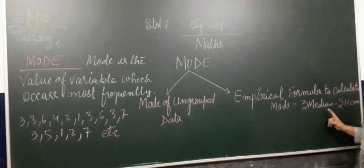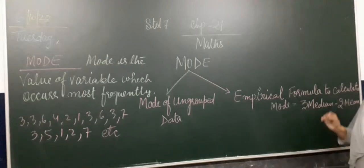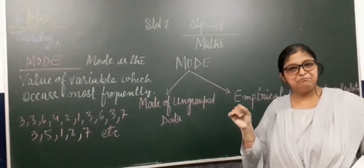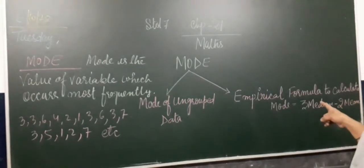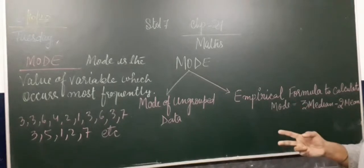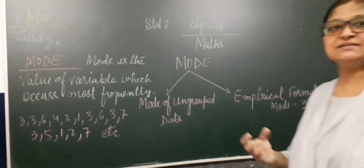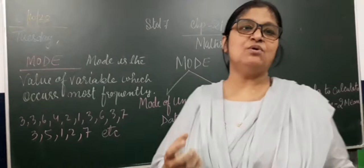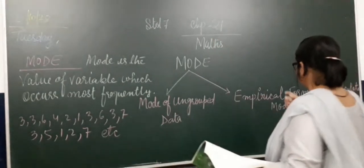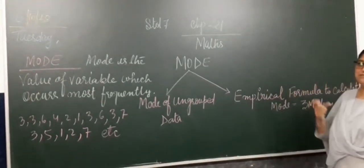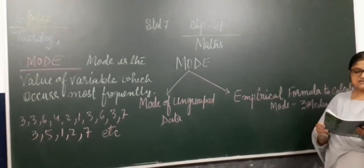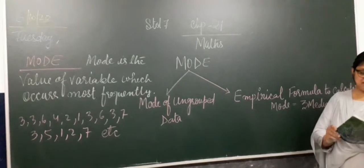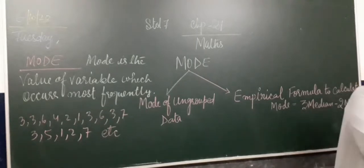Three median minus mean. Mode to remove it. First you will calculate mean and median, multiply median by 3 and mean by 2, then subtract. Which answer will be the mode of a particular data. This is the use of table form. We will calculate it by empirical method for ungrouped data.